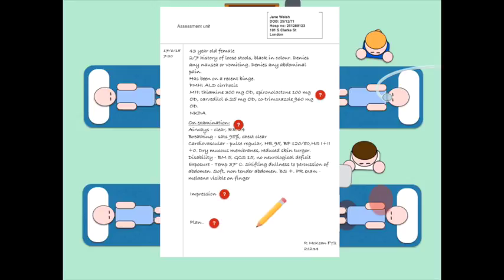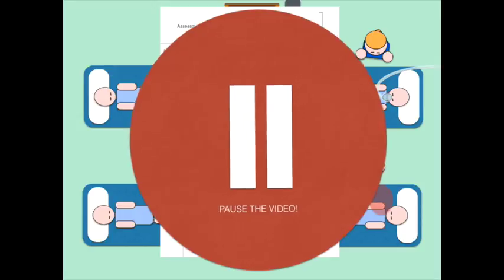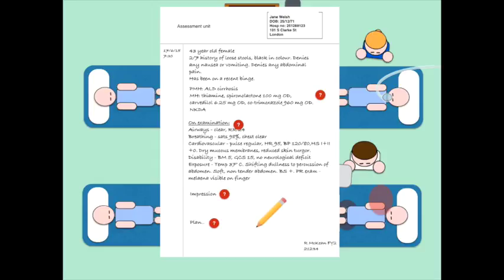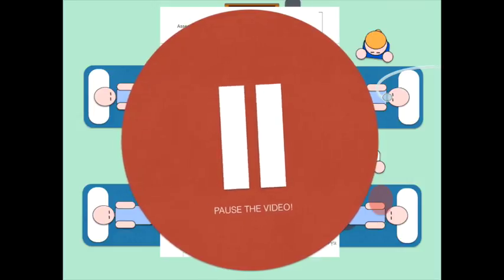Bringing all this together, have a think what the differential diagnosis is here. So the differential would be an upper GI bleed, probably in this case because of bleeding from an esophageal or gastric varices, but could also be because of gastritis or a gastric or duodenal ulcer as well. Again, take a pause. What other causes can you think of for an upper GI bleed?